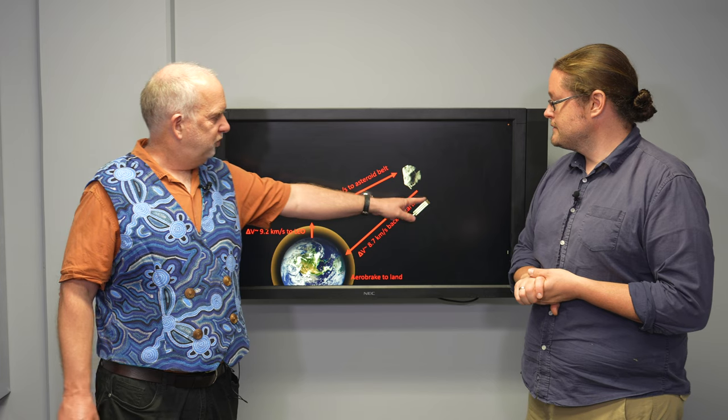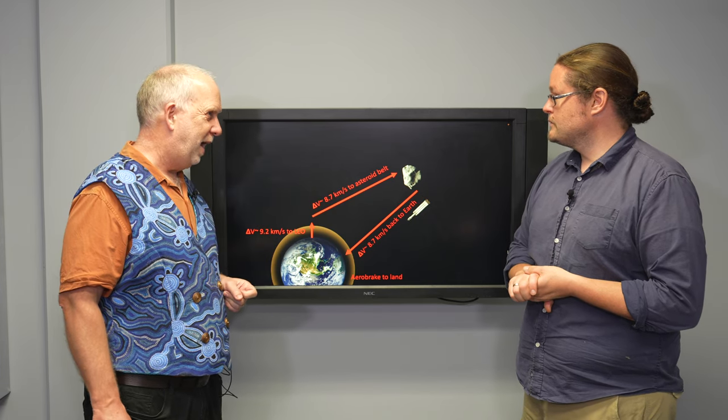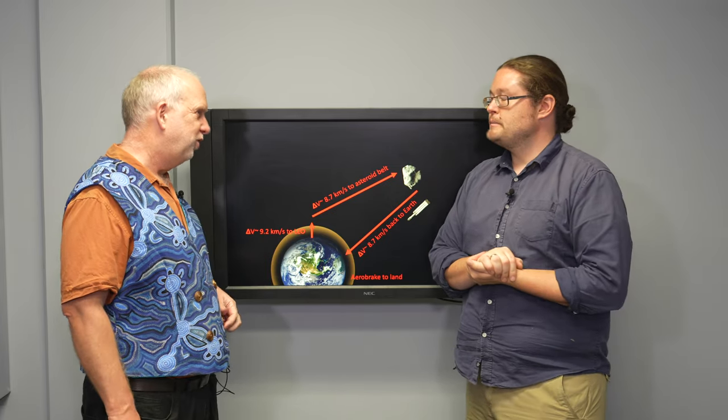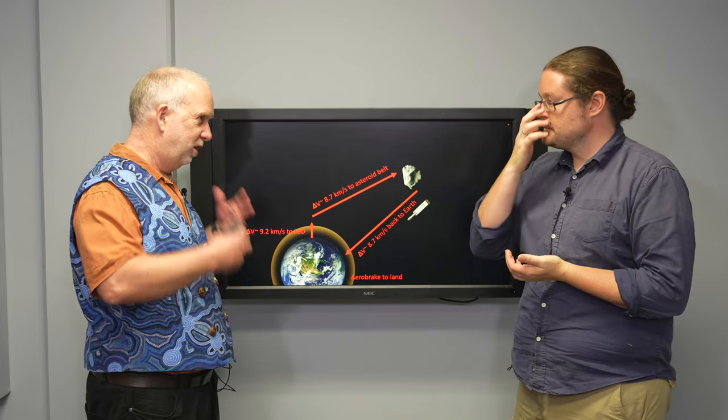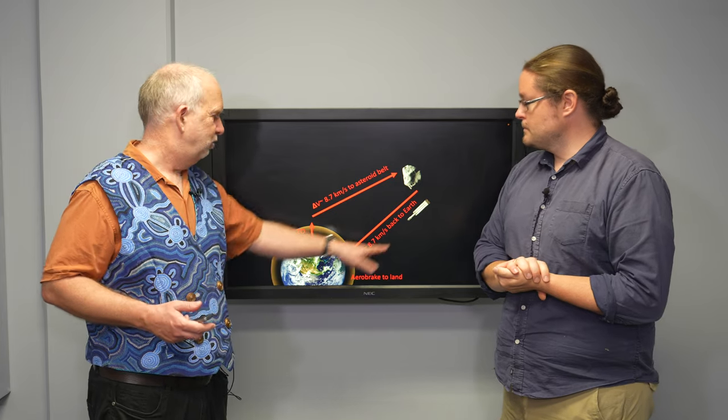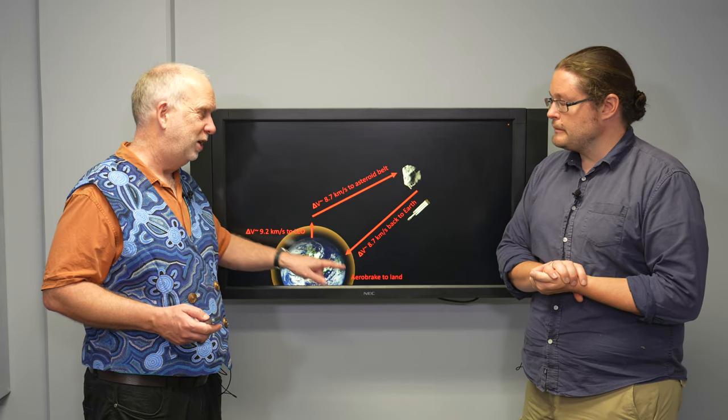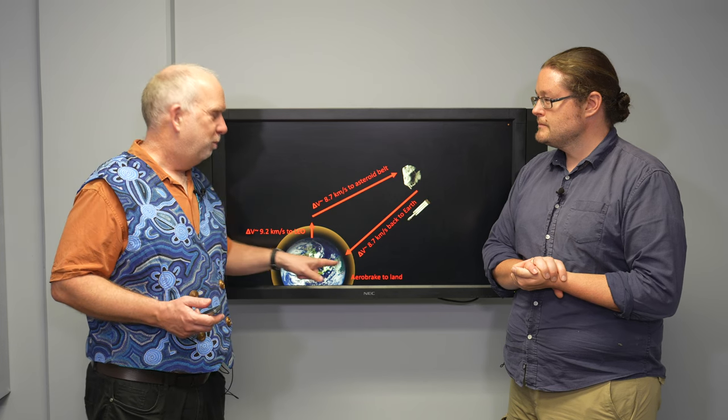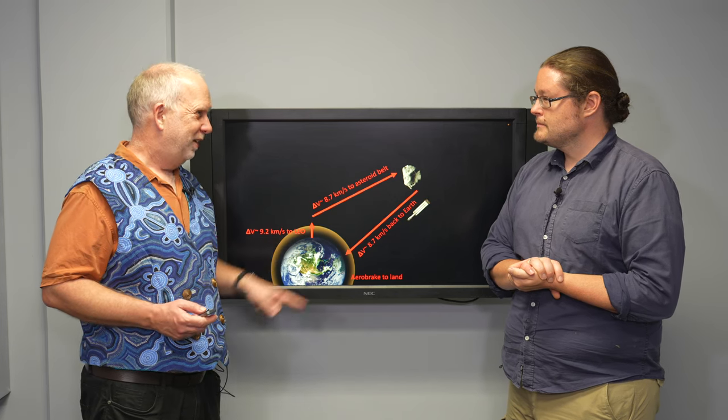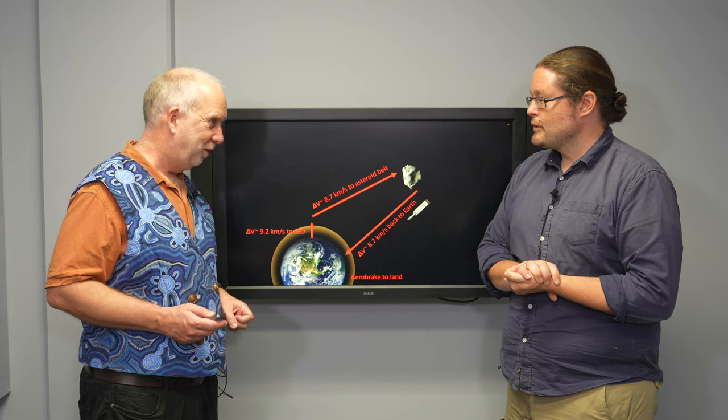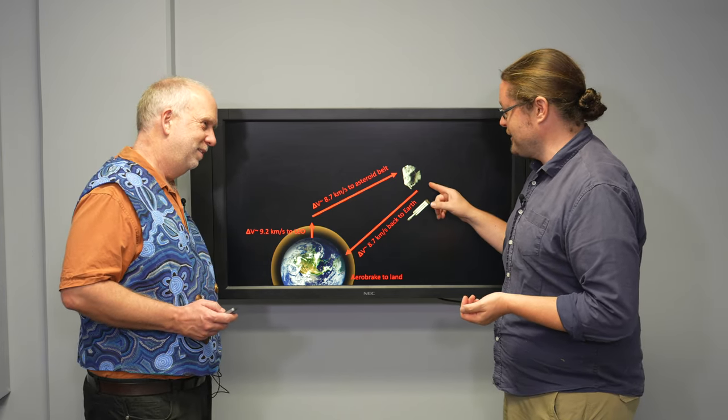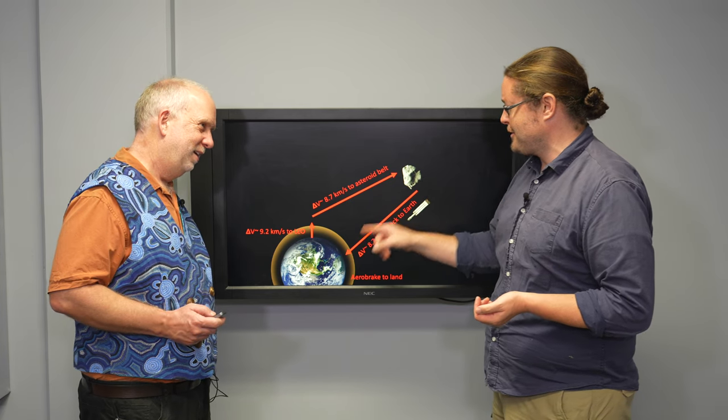So let's say we want to send one Falcon Heavy back loaded with a payload of 64 tons. It's going to need all that mass of fuel to give it the delta V of about 9 kilometers a second. So we need a full fuel Falcon Heavy here to bring 64 tons of lovely asteroid metal back to Earth. So you need all of the fuel, essentially, just to get your cargo back.